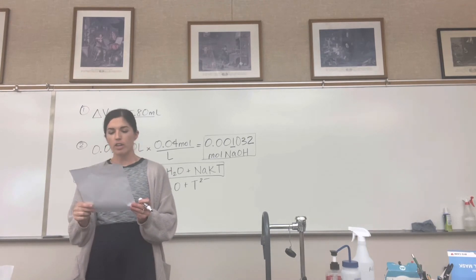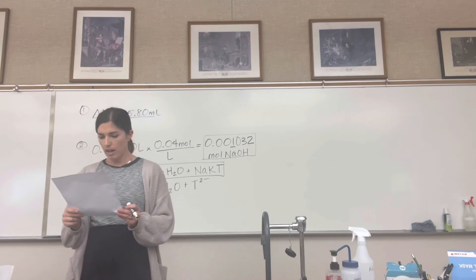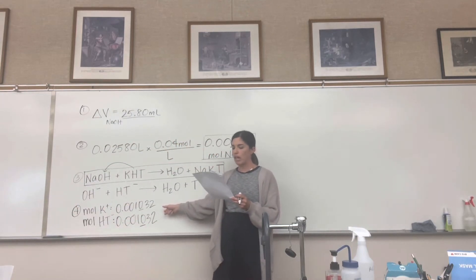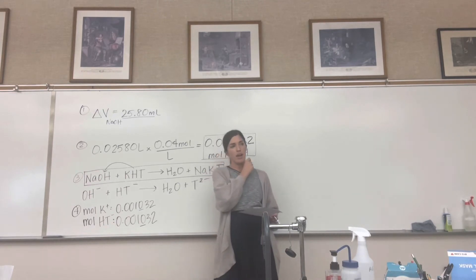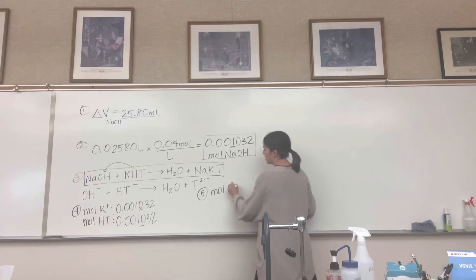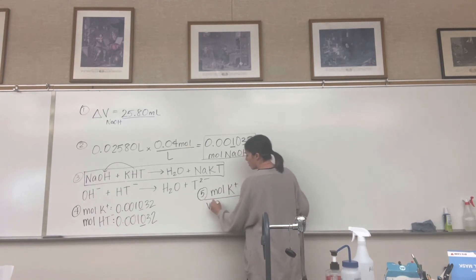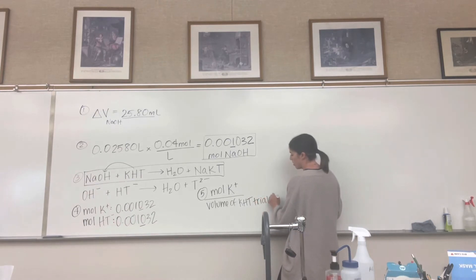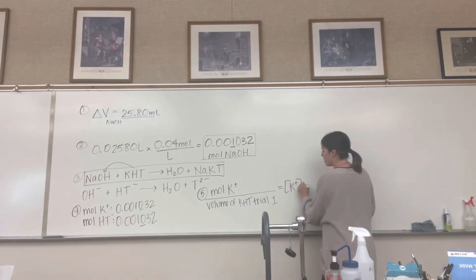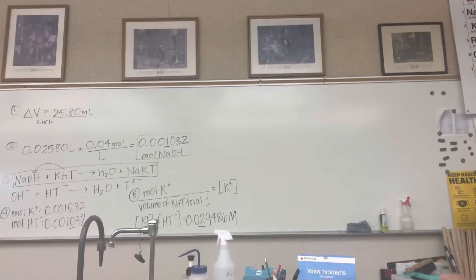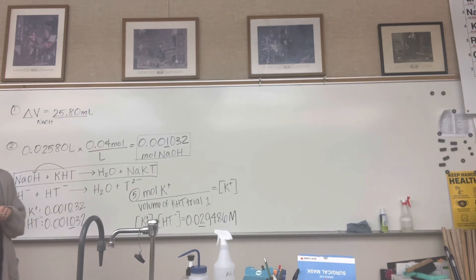Number five: calculate the molarity of HT⁻ and K⁺ for each trial by using your answer from number four and the volume of KHT from your data table. That's why you had your second burette with the KHT — potassium hydrogen tartrate — in it. Take your moles of potassium and divide by the volume of KHT for trial one. That gives you the molarity of K⁺. Do it for all the ions for each trial. Hopefully you've got at least one ion done.